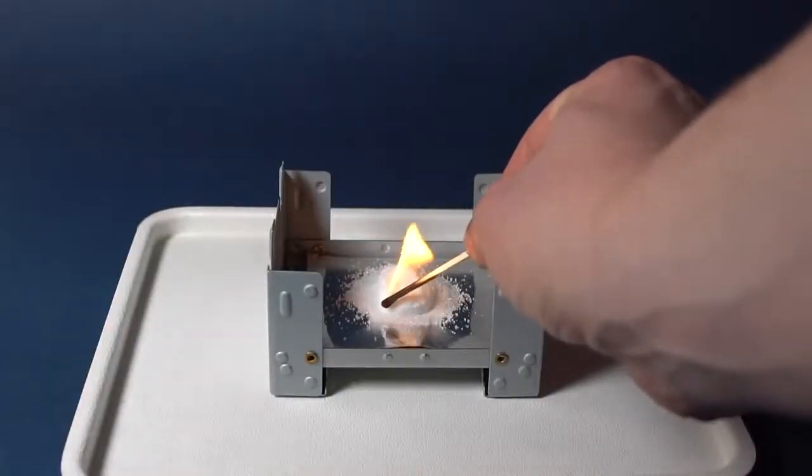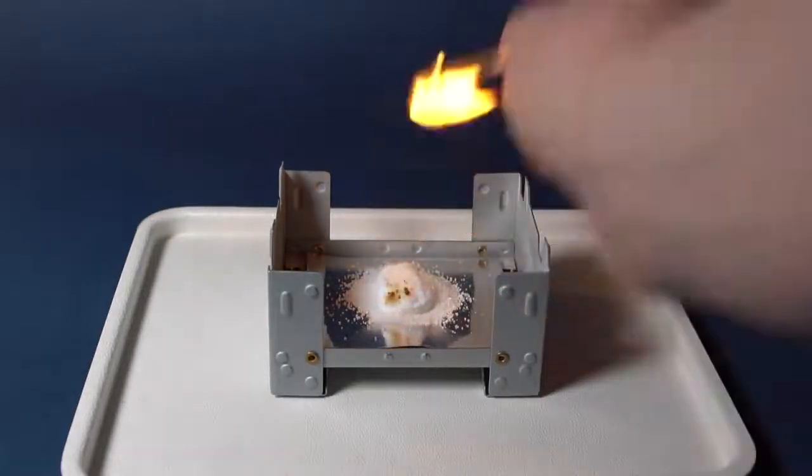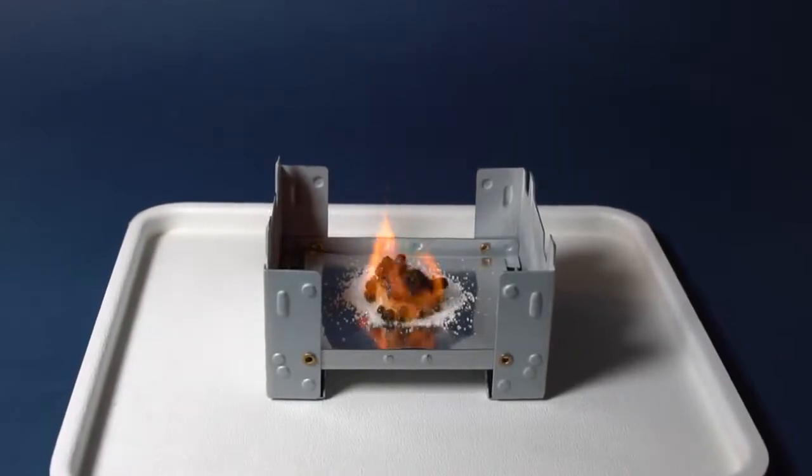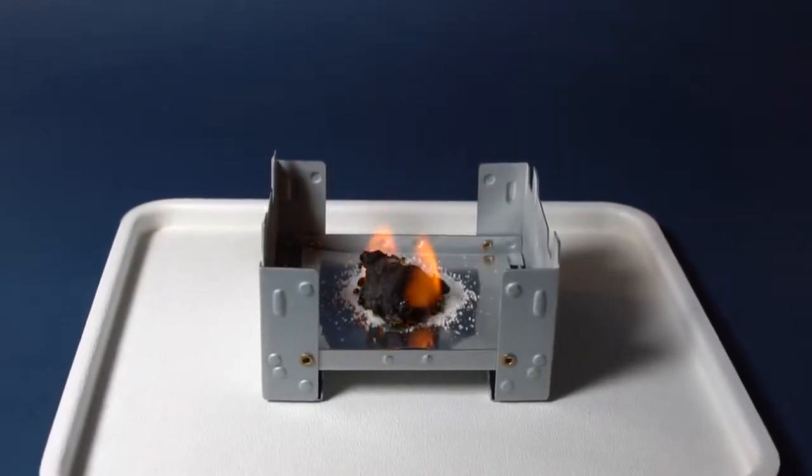Ignite the solar fuel to start the reaction. The solar fuel will catch fire immediately, igniting sugar in the mixture with soda. Some of the sugar burns completely, turning into carbon dioxide and water vapor.